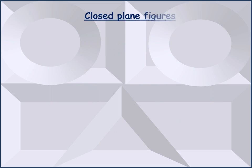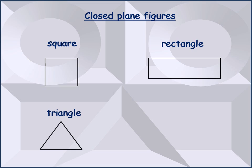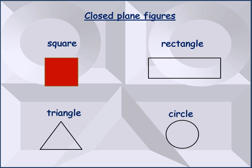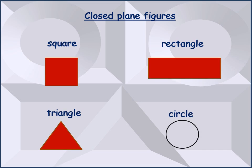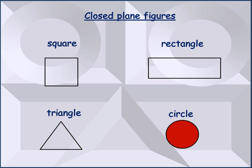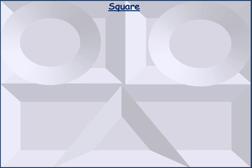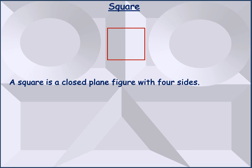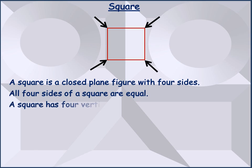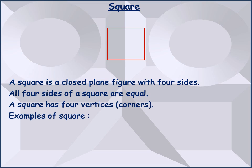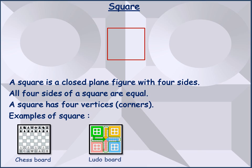Some examples of closed plane figures are square, rectangle, triangle, and circle. Square, rectangle, and triangle are examples of closed plane figures drawn with straight lines, and a circle is an example of a closed plane figure drawn with curved lines. A square is a closed plane figure with four sides and all four sides of a square are equal. A square has four corners which are called its four vertices. Examples of a square are a chess board, ludo board, and carom board.